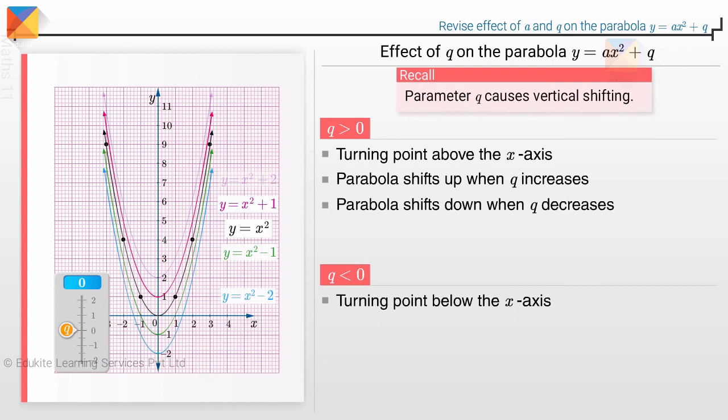The behavior is the same even when Q is negative. When Q is decreased, as it does here from 0 to minus 2, the graph shifts downwards.